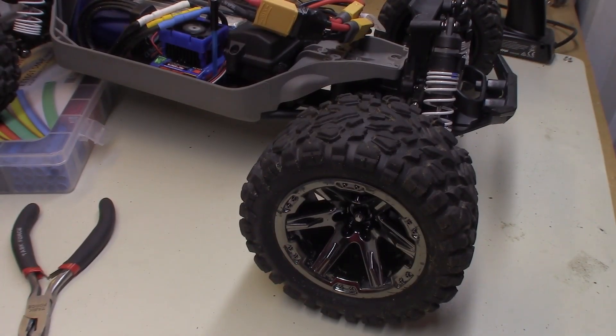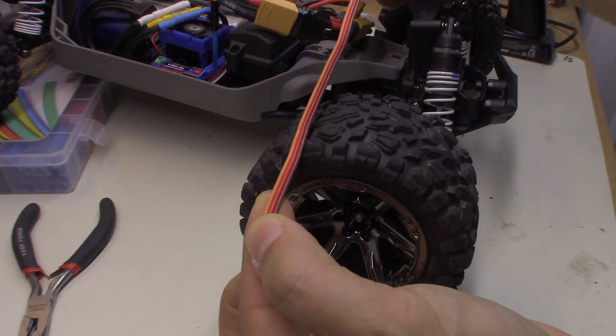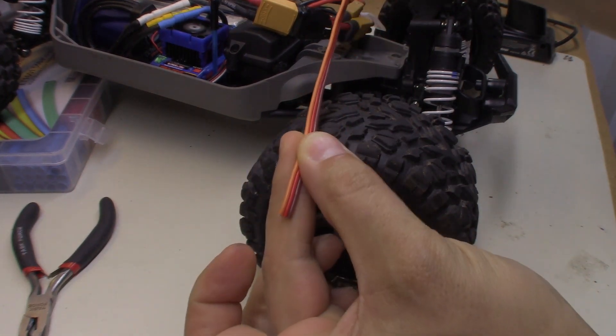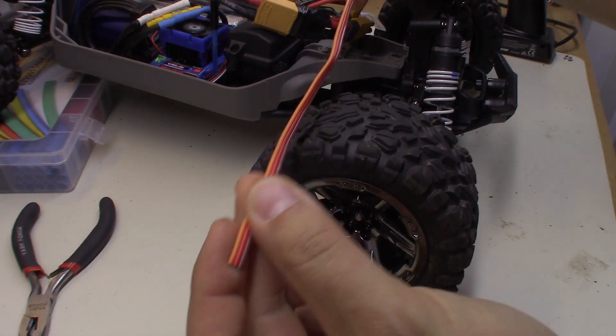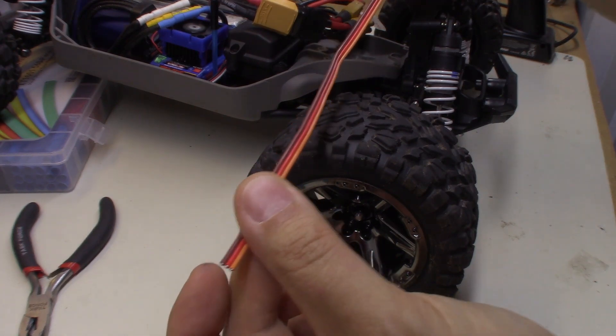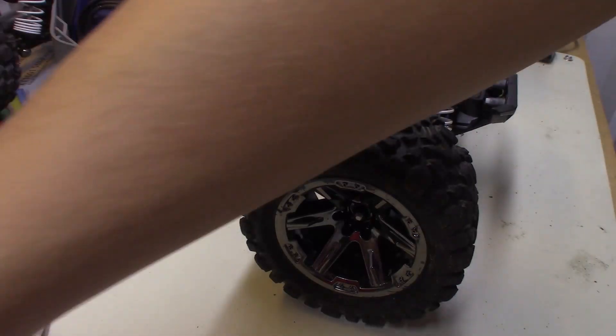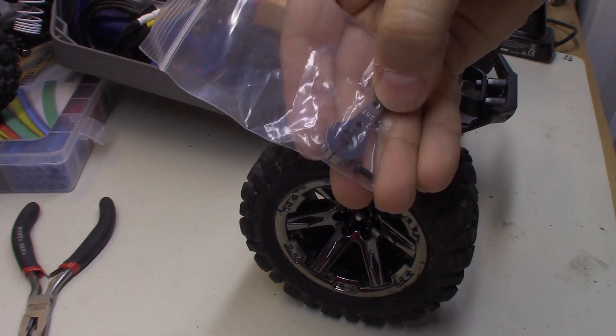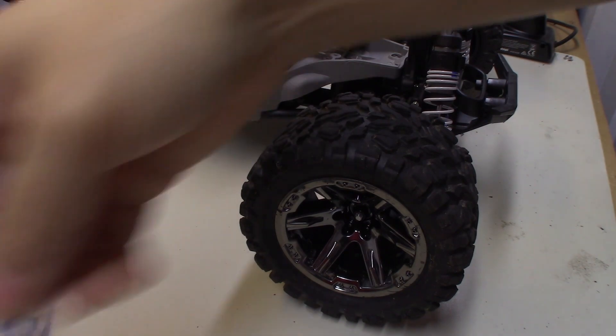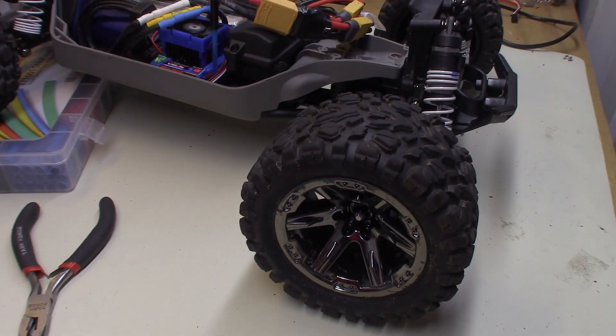All right, well, we got it installed. I went ahead and pulled maybe 10 inches, 8 inches out of the servo wire. It's not really necessary, but it makes it a lot neater in the installation. Everything went fine with the install. I was not able to use the aluminum servo arm that came with it because it was just too long. So we've got it in here, and let's see how this thing feels.